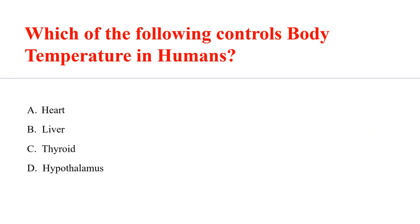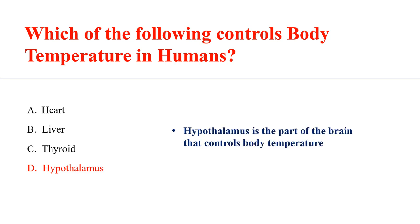The hypothalamus controls body temperature in humans. The hypothalamus is the part of the brain that controls body temperature.